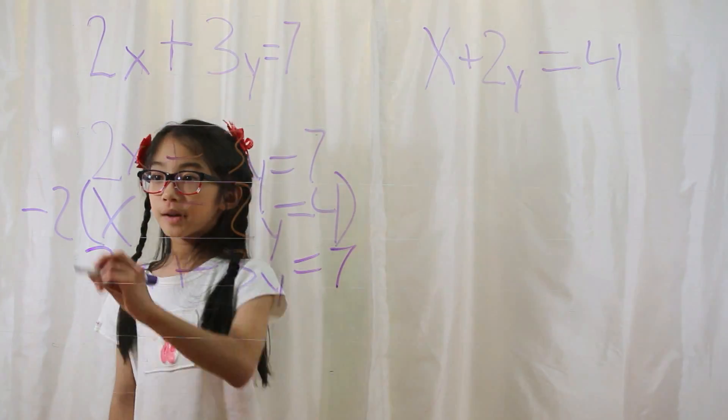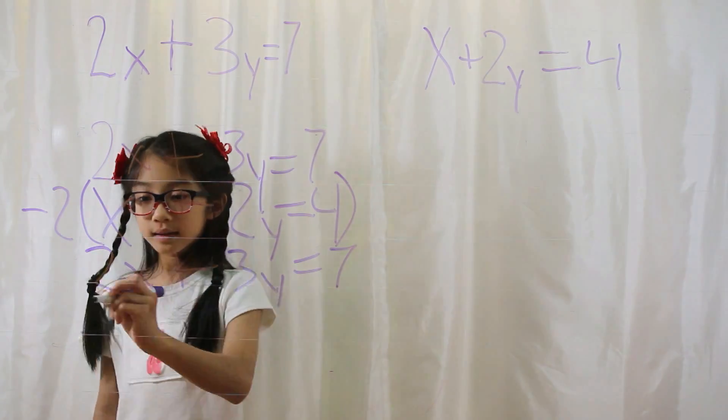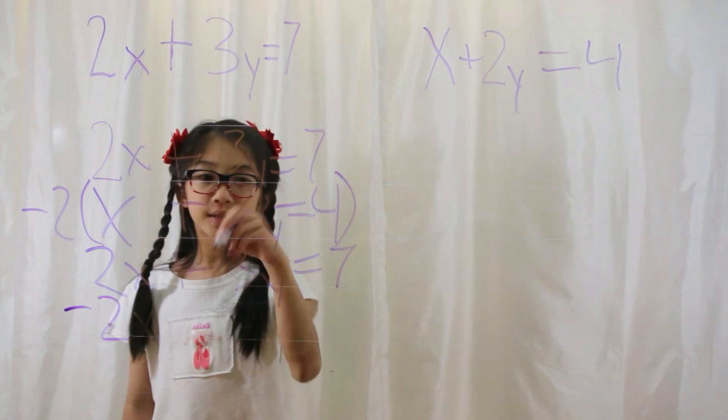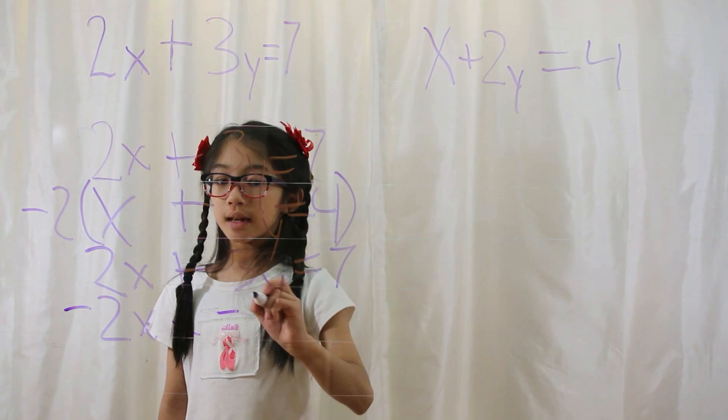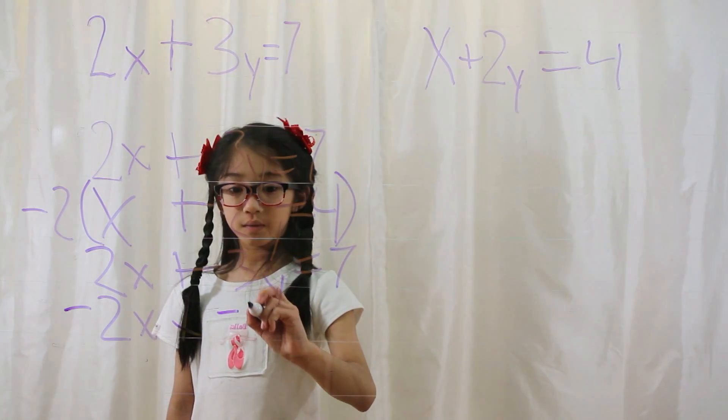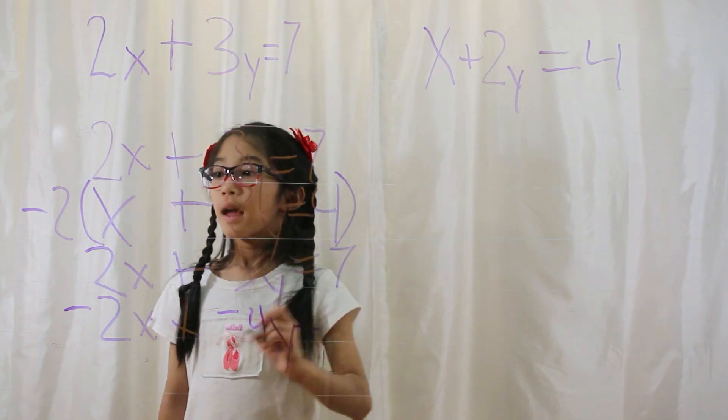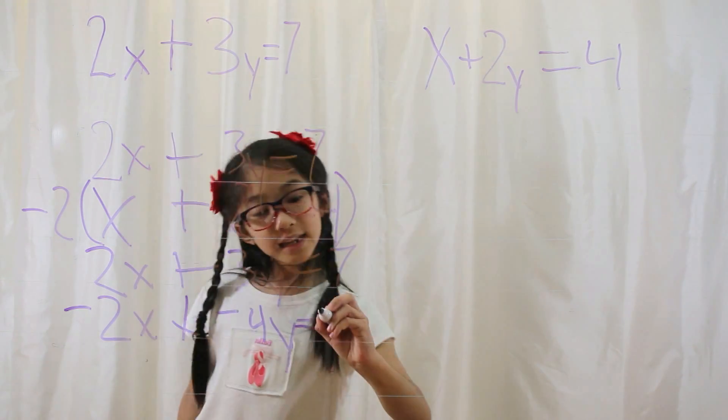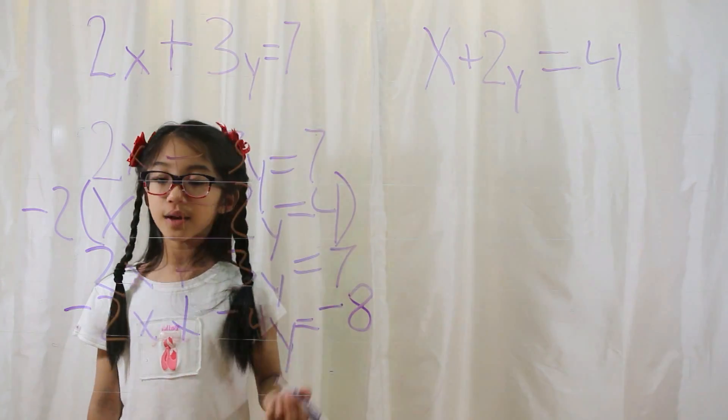Then you multiply negative 2 by the whole equation. Negative 2 times x is negative 2x, and then negative 2 times 2y equals negative 4y. Negative 2 times 4 equals negative 8. There you go.